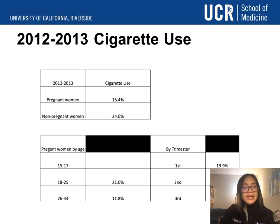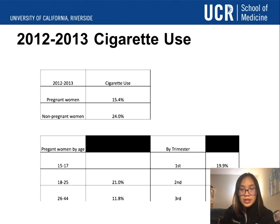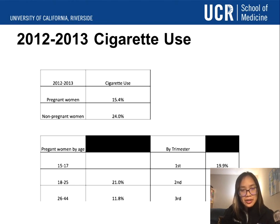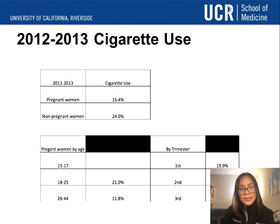What about nicotine use? 15.4 percent of pregnant women reported nicotine use. In terms of age, the rate was higher among women aged 18 to 25 at 21 percent, and it is more commonly used in the first trimester at 19.9 percent reporting.